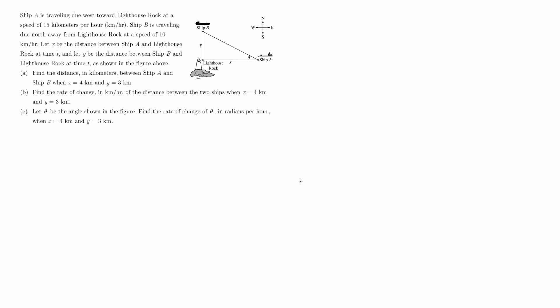In this problem, we're going to examine some related rates. We have ship A traveling due west toward Lighthouse Rock at a speed of 15 kilometers per hour. Then we have ship B traveling due north at a speed of 10 kilometers per hour. Ship B is moving farther away from the Lighthouse; ship A is moving closer. X represents the distance between ship A and the Lighthouse at time t, and Y is the distance between ship B and the Lighthouse at time t.